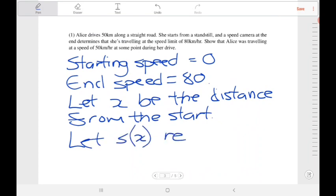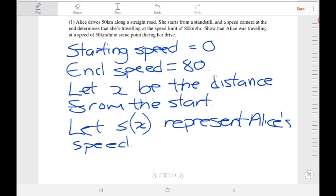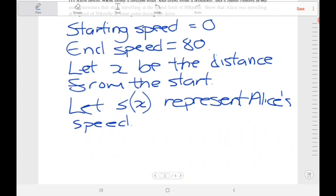The question told us that this was continuous. The IVT needs a continuous function on a closed interval. We have an interval between the start and end of her drive, 0 and 50 kilometers. So this is a continuous function on the interval 0 to 50.